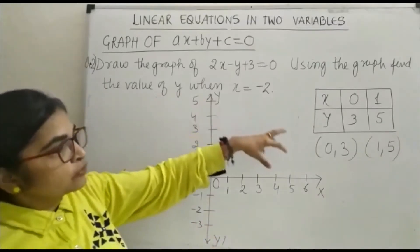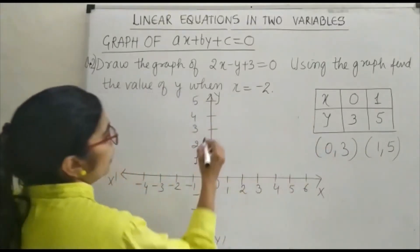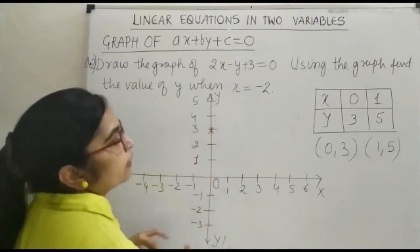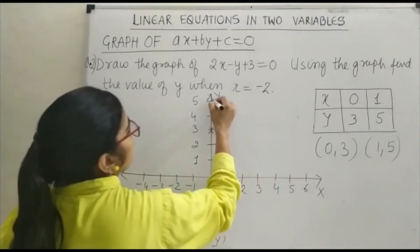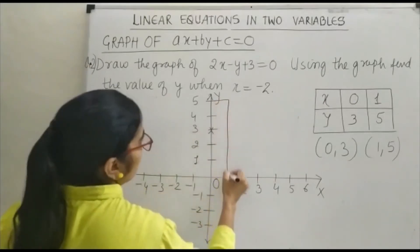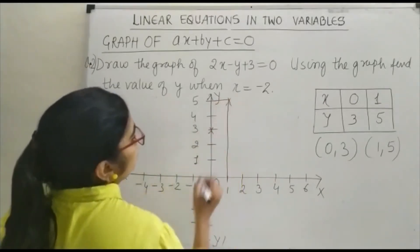Now, first coordinate is (0, 3). Next is (1, 5). This is your 1 and this is your 5. So this point is (1, 5).